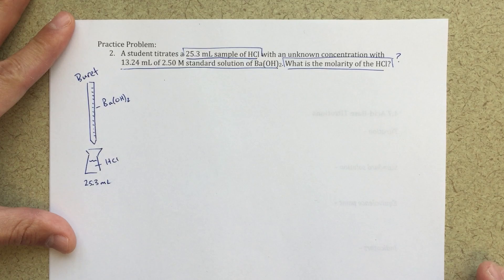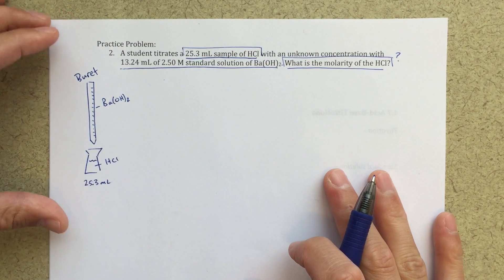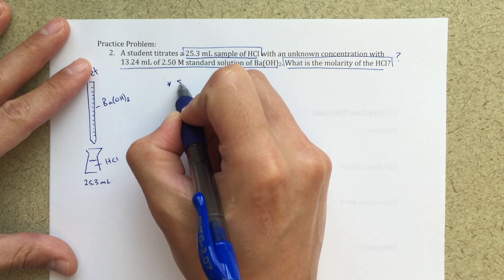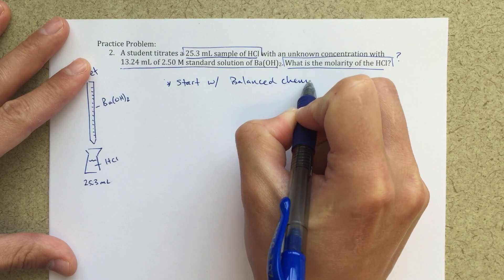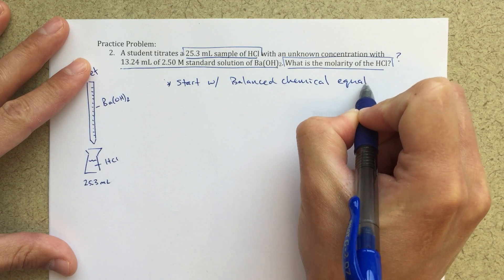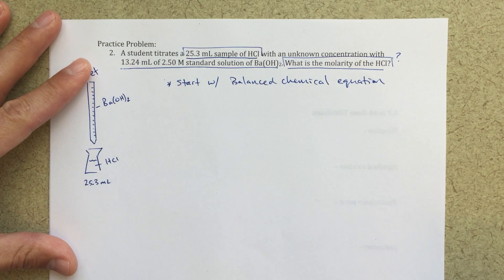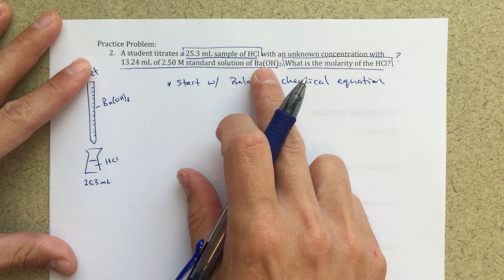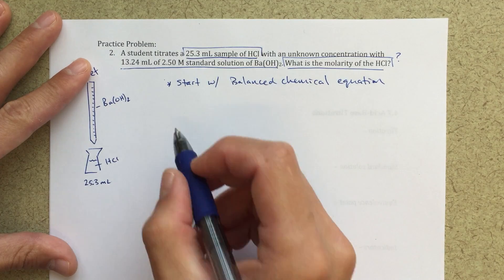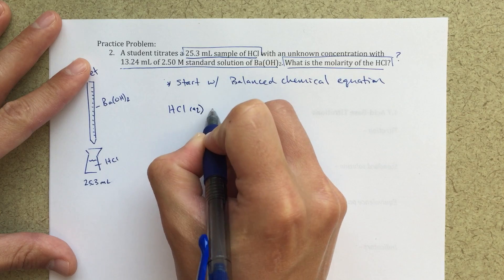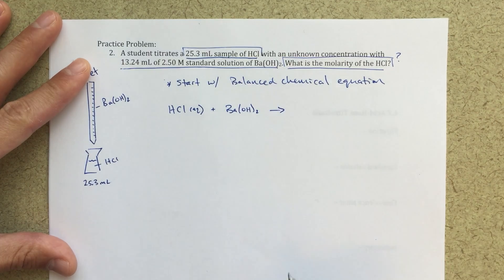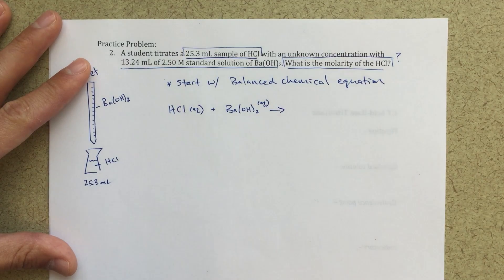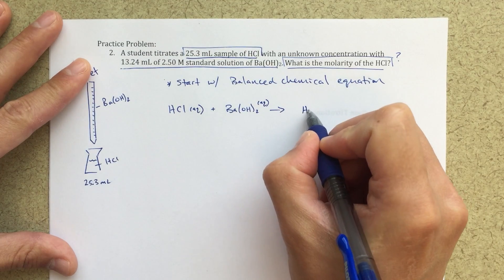So this is a very standard type titration problem. You're going to see things like this again and again. So basically to get started, we always want to start with a balanced chemical equation. And in this case, it's not as straightforward as our typical sort of strong acid, strong base titration reactions, because we've got barium hydroxide. And barium hydroxide is a little bit more complicated because we've got Ba(OH)2. So how do we take that into account? So the way I would look at this, I would start with my HCl, and then my barium hydroxide.